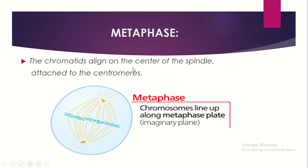In metaphase, the chromatids align at the center of the spindle, attached to the centromere. The chromatids are positioned at the center of the cell in metaphase.